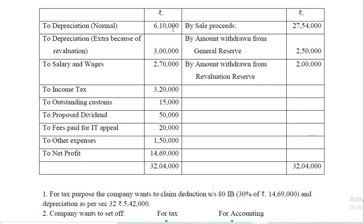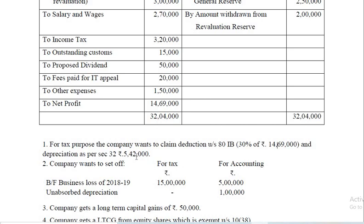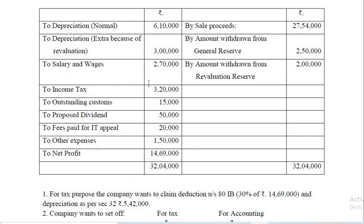While computing book profit: 6,10,000 plus 3,00,000 — both normal and revaluation depreciation — should be added. But while deducting, you take only normal depreciation — that is 6,10,000. So 9,10,000 is added but only 6,10,000 is deducted while computing book profit. As far as business income is concerned, 9,10,000 should be added and 5,42,000 should be deducted. Depreciation as per Section 32 does not come into the book profit computation.